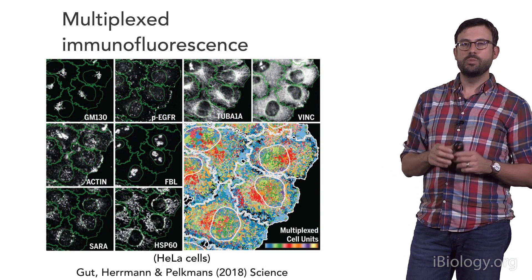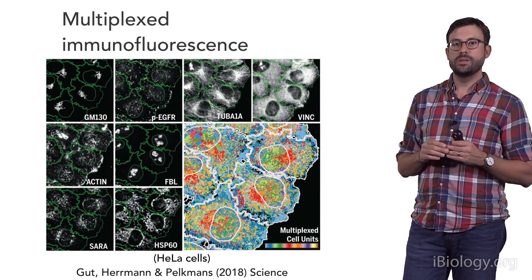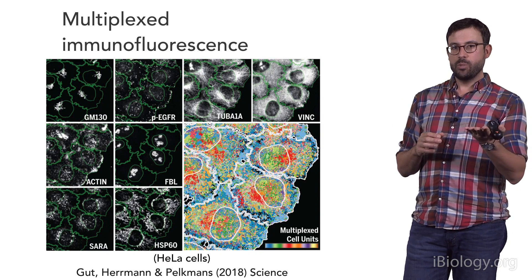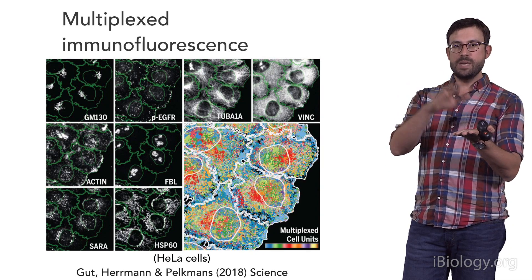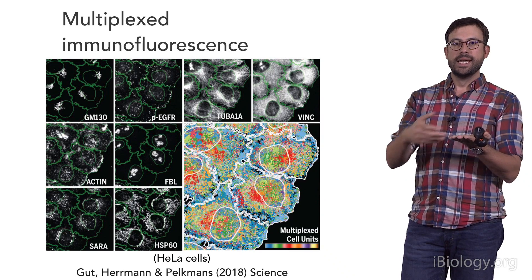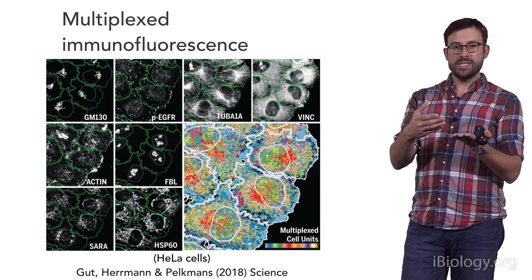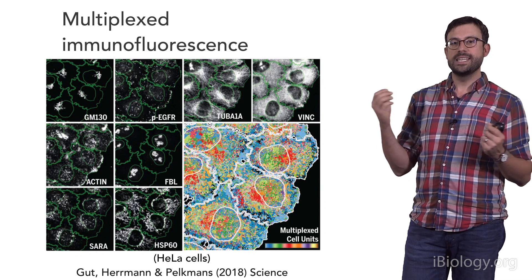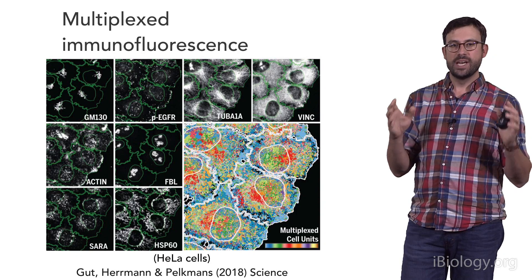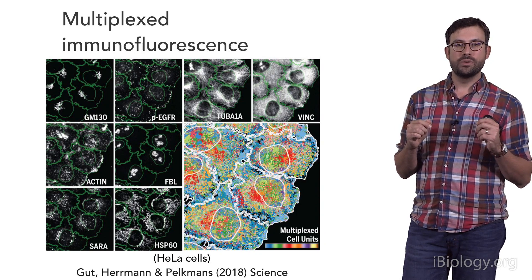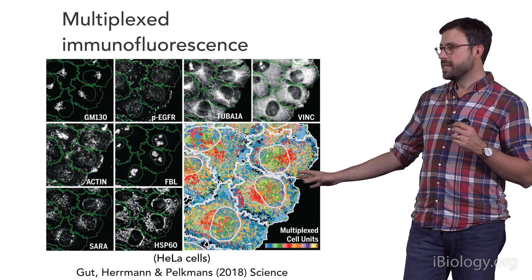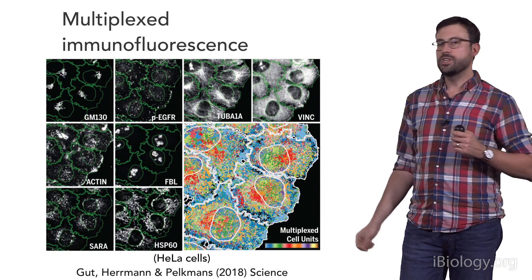Antibodies usually require cells to be fixed and frozen in time, which is obviously a limitation. But they have one main advantage: the same sample can be bound with antibodies, imaged, and then these antibodies can be washed away, leaving the sample ready for a next round of imaging. If we can do this process iteratively, we can localize many proteins in the same sample over and over again. These multiplexing approaches are going to become very powerful in the near future — you can check out a great example from the Parkman's lab that was published recently.